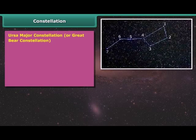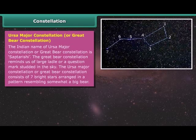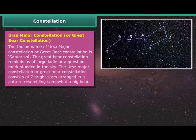Ursa Major Constellation or Great Bear Constellation: The Indian name is Sapturishi. The Great Bear Constellation reminds us of a large ladle or a question mark studded in the sky. The Ursa Major Constellation consists of seven bright stars arranged in a pattern resembling somewhat a big bear.